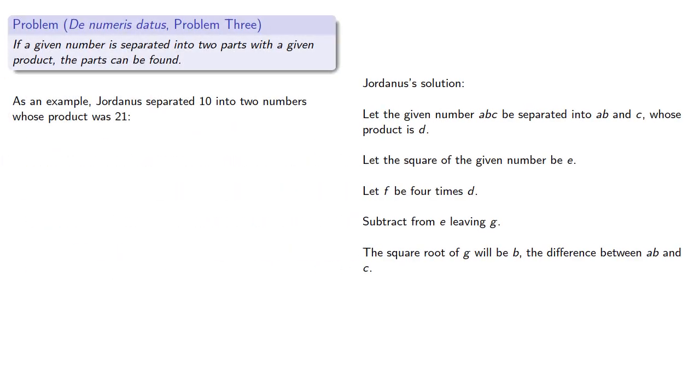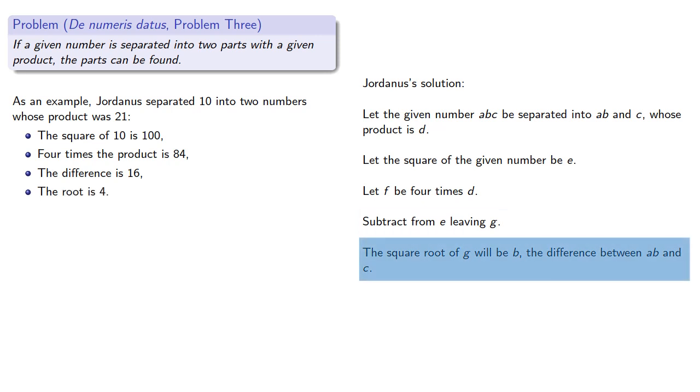As an example, Jordanus separated 10 into two numbers whose product was 21. For ease of readability, we'll use our modern number system instead of Roman numerals. The square of 10 is 100, four times the product is 84, the difference is 16, the root is 4. Now we have the problem of separating 10 into two numbers with a difference of 4.